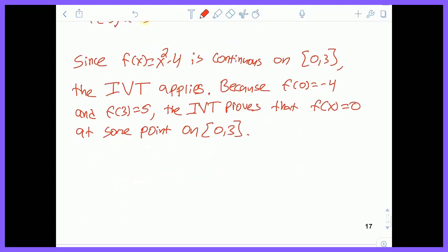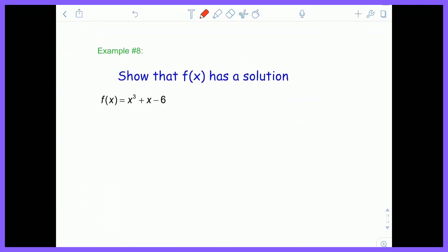Let's try another example. Show that f(x) has a solution—meaning we need f(x) = 0. This doesn't give any bounds this time, no closed interval. But that's okay, because f(x) = x³ + x - 6 is continuous for all values of x. So to figure this out, we need to pick some numbers.